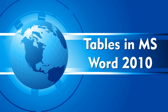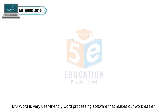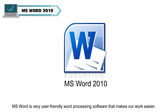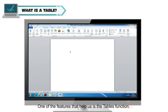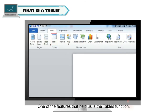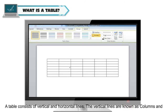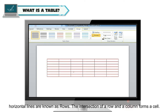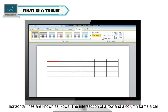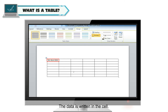Tables in MS Word 2010. MS Word is very user-friendly word processing software that makes our work easier. One of the features that helps us is the tables function. A table consists of vertical and horizontal lines. The vertical lines are known as columns and horizontal lines are known as rows. The intersection of a row and a column forms a cell, and the data is written in the cell.